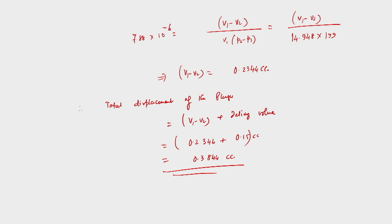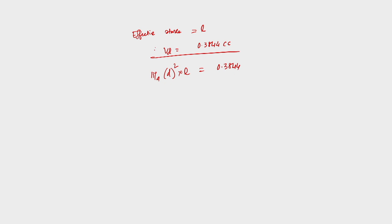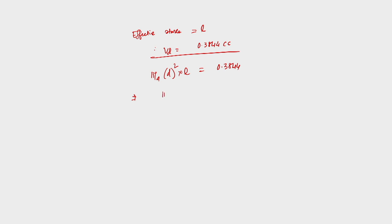Effective stroke L: displacement volume V_d = (π/4) × d² × L = 0.3844 cc. With pump plunger diameter d = 8 mm = 0.8 cm: (π/4) × 0.8² × L = 0.3844, giving L = 0.7647 cm ≈ 0.76 cm. These are the answers for Problem 3.